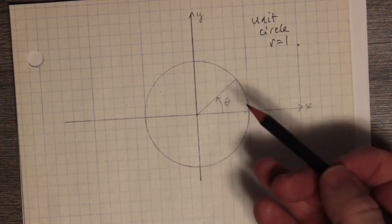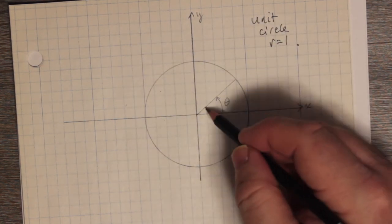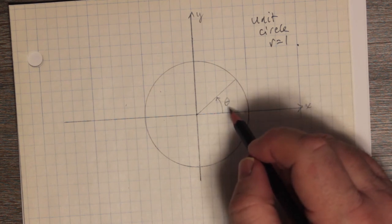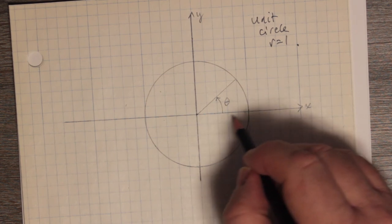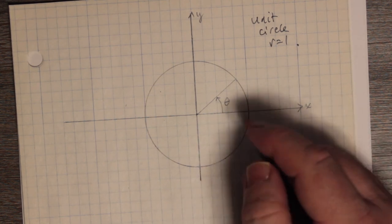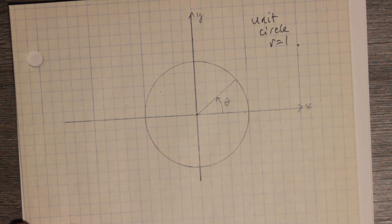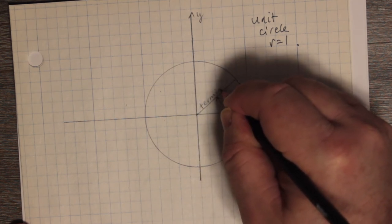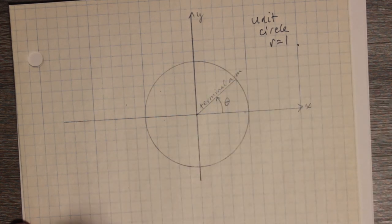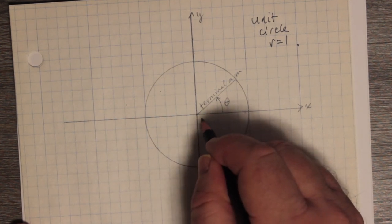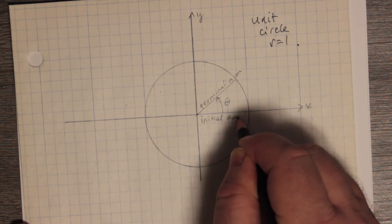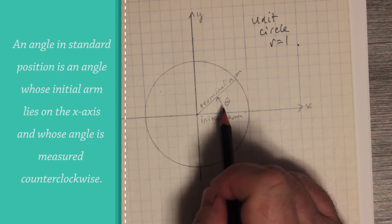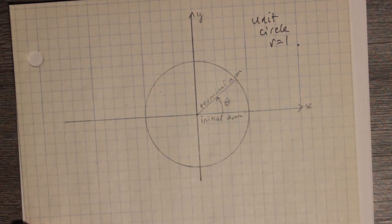Angles in standard position are measured from the positive x-axis going counterclockwise. They actually go in the counterclockwise direction. This thingamajig I've been referring to is called the terminal arm — it's the terminal arm of the angle. An angle is measured from the initial arm. An angle in standard position is when the initial arm lies on the x-axis and the terminal arm is somewhere else, and the measurement proceeds counterclockwise from the initial arm to the terminal arm.